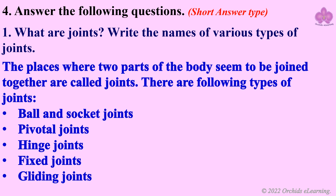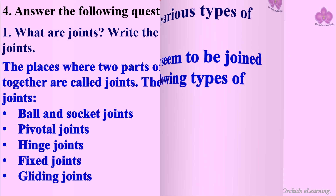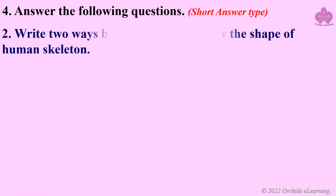The types of joints are: ball and socket joints, pivotal joints, hinge joints, fixed joints, and gliding joints. Write two ways by which we may know the shape of the human skeleton: we can know the shape of a skeleton by feeling it, and we can know the shape by X-ray images of the human body.